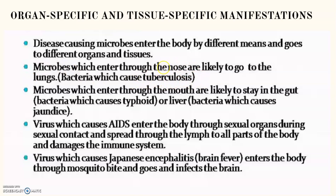Any microorganism causing respiratory disease — whether bacteria or virus — enters through the nose and reaches our respiratory system, especially the lungs. If microbes enter the body through the mouth via contaminated food or water, they can be in the form of bacteria, virus, or protozoa. Sometimes they cause typhoid, jaundice, and other related diseases which affect our digestive organs first, and then the infection spreads to the whole body.